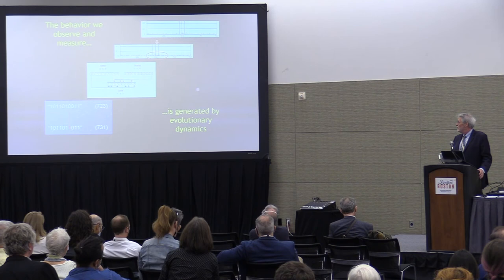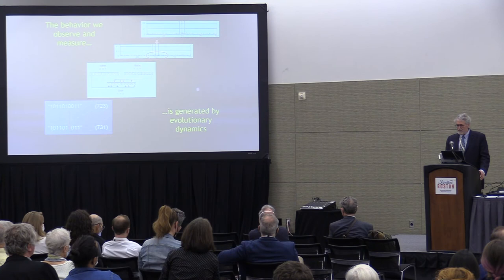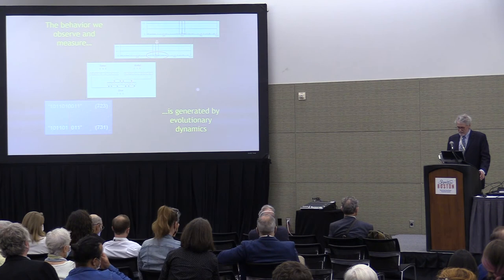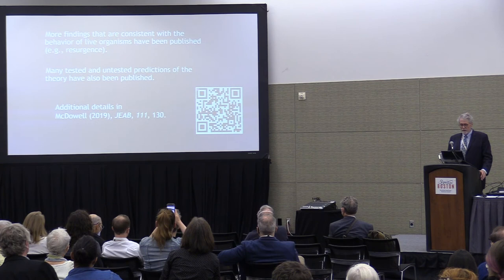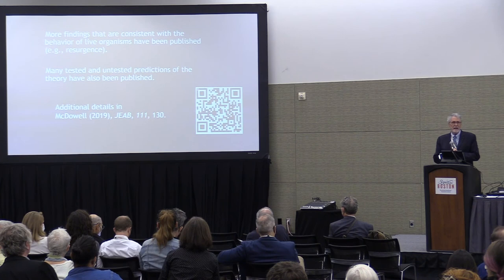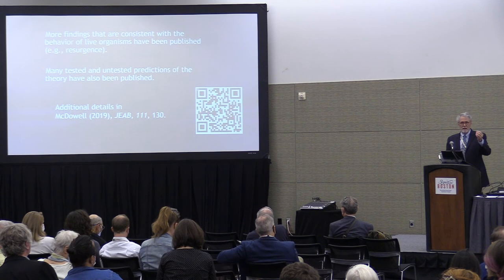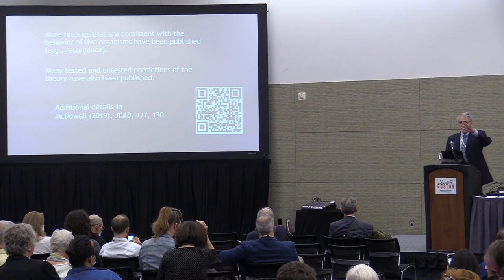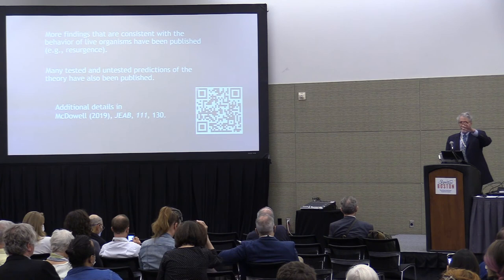The behavior we observe and measure appears to be generated by evolutionary dynamics. Evidence supporting the theory has been published in 15 articles and counting. There are also many tested and untested predictions of the theory that have been published. The untested predictions are second-order predictions — predictions of phenomena that have not yet been measured — constituting strong tests of the theory. They're out there for anybody to see; you can run those studies and test those predictions, and there's a possibility to disconfirm the theory if a prediction doesn't come out.